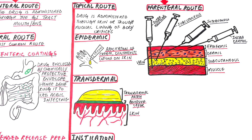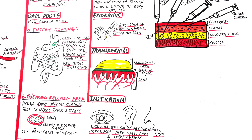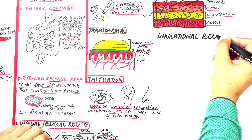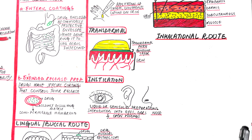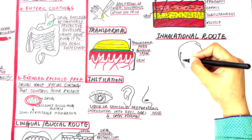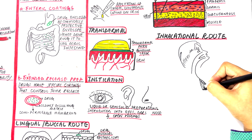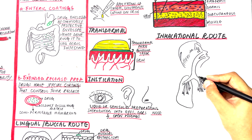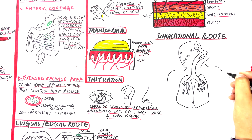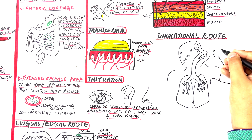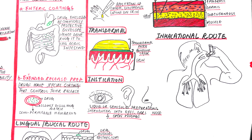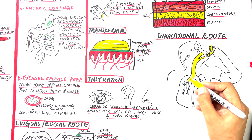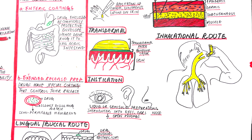Another route worth mentioning is the inhalational route, which provides rapid delivery of drug across the large surface area of mucous membranes of the respiratory tract and pulmonary epithelium. This route is convenient for patients with respiratory disorders such as asthma or chronic obstructive pulmonary disease, as the drug is delivered directly to the site of action, thereby minimizing any systemic side effects.